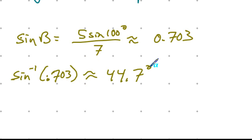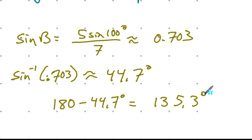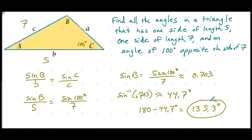Since we're working with sine, there's that other possibility: 180 minus 44.7 degrees equals 135.3 degrees, since we could be dealing with the first or second quadrant. However, we're already given an angle of 100 degrees. Adding 135.3 degrees to 100 degrees exceeds 180 degrees, making that possibility impossible. Therefore the only valid solution is B approximately equal to 44.7 degrees.